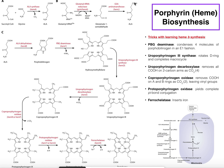Regardless of the source of ALA, the pathway is pretty well conserved. This pathway has been studied both in bacteria and eukaryotic cells that possess mitochondria. In eukaryotic cells synthesizing heme, heme synthesis actually spans two cellular compartments — some reactions take place in the mitochondria and the rest take place in the cytoplasm. Let's now look at how we convert ALA, eight molecules of it, into heme.